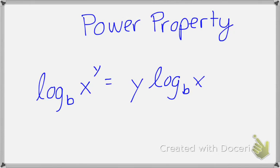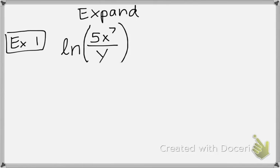We're going to practice using these three properties to expand and condense. So if I ask you to expand the natural log of 5x to the 7th divided by y, I can see that I'm going to have three separate logarithms — one for 5, one for x to the 7th, and one for y.